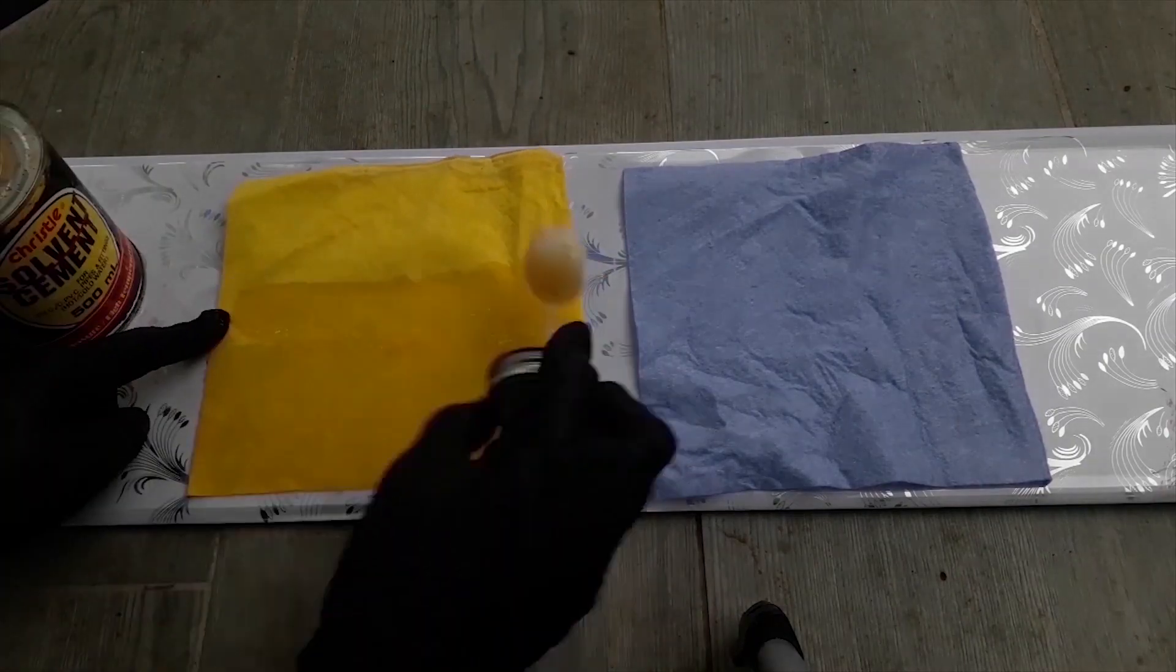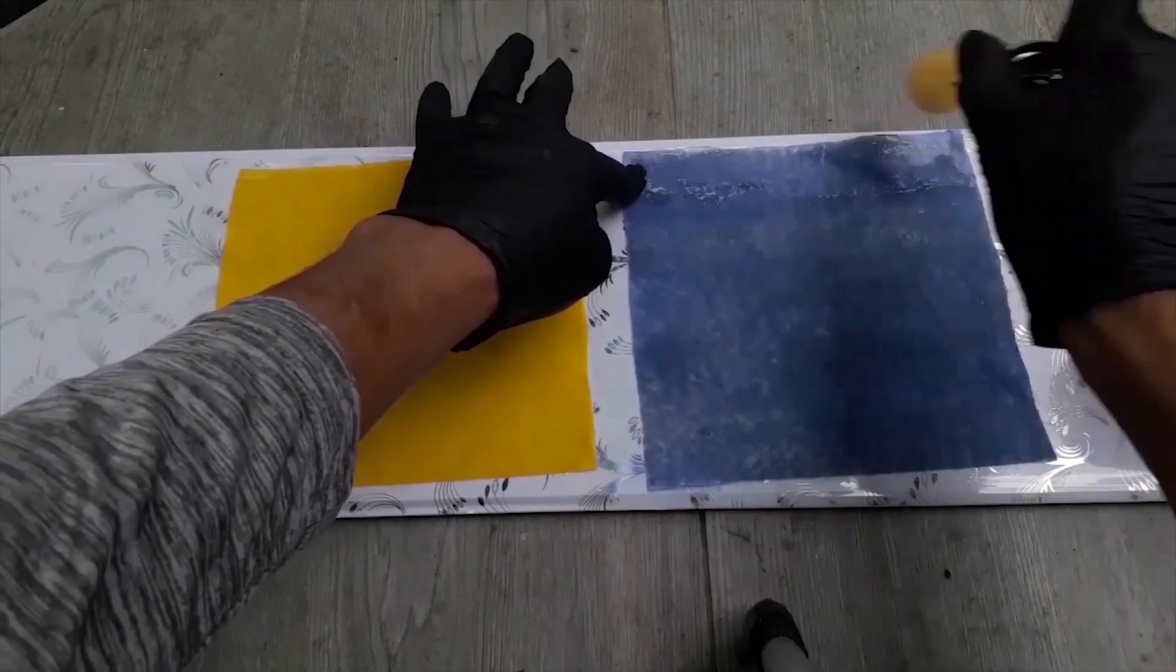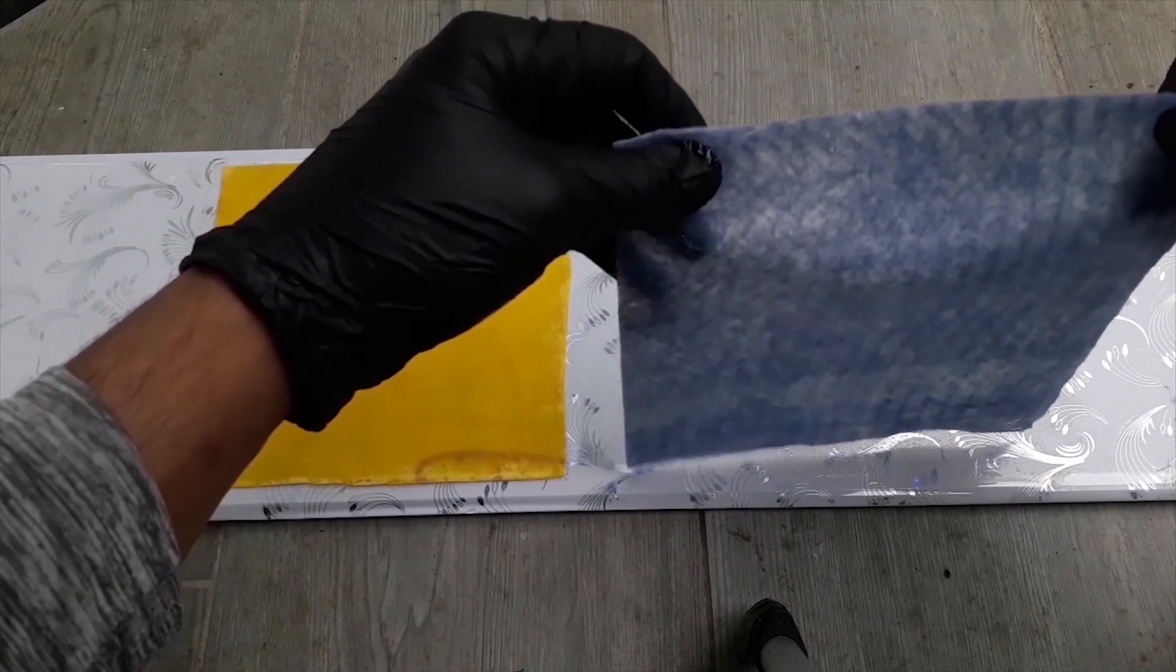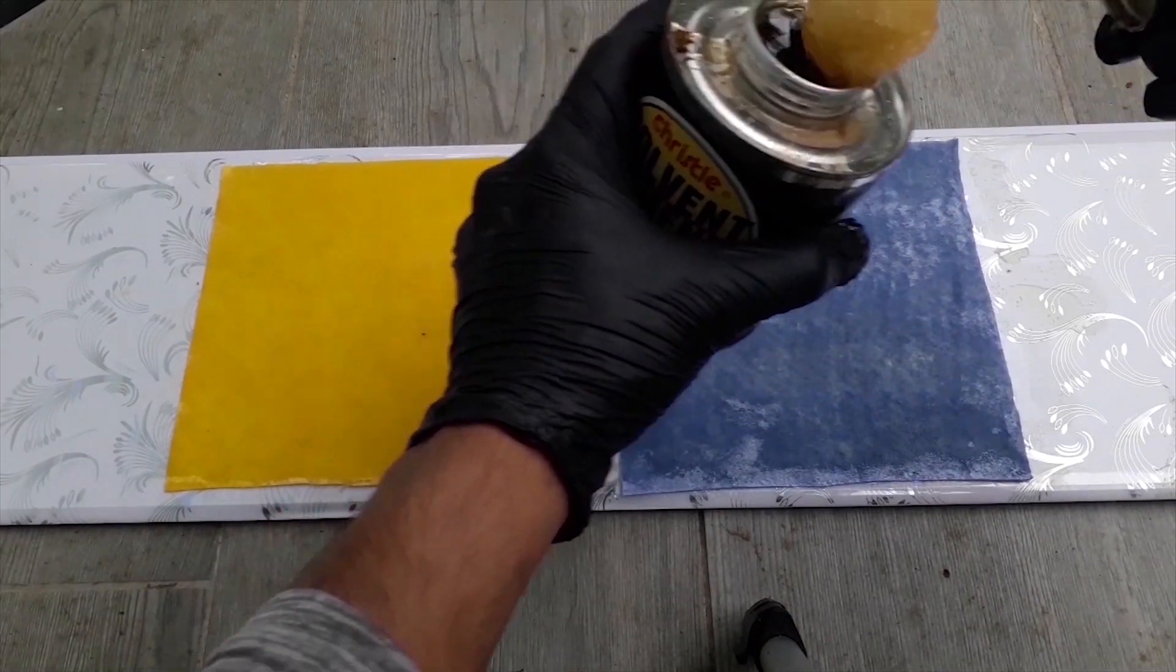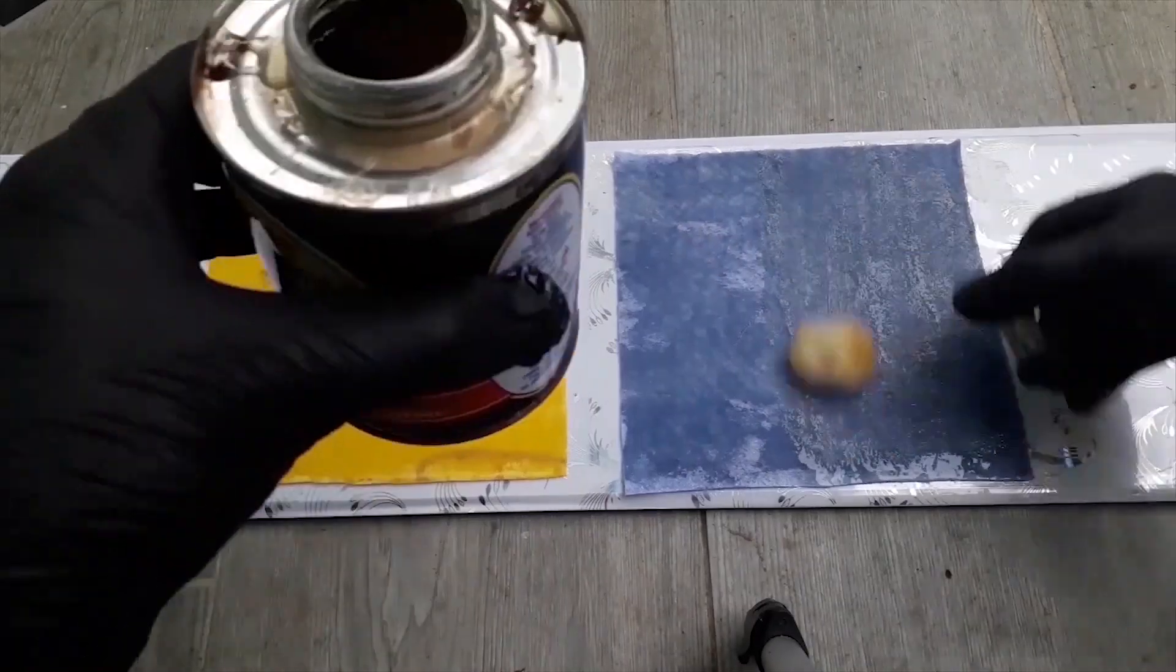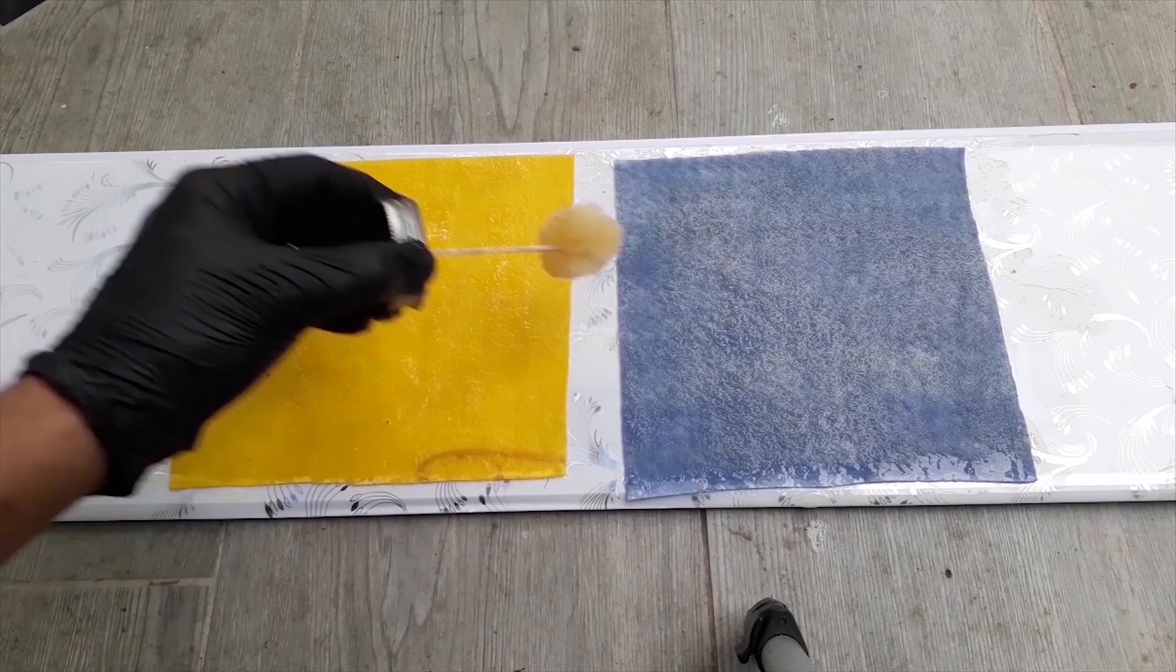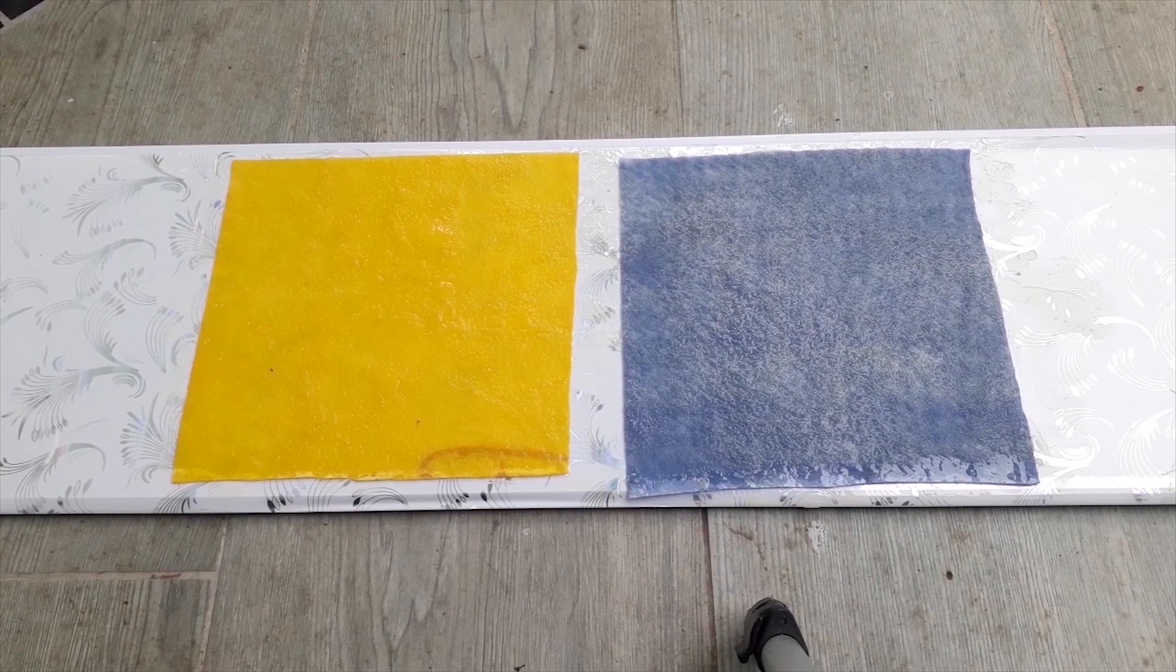This must be done outside in a well-ventilated area as these fumes can cause you to get a little high. Once one side of the cloth is coated with the glue, the cloth is then flipped over and the coating process is repeated. Once the coating process is done, I then allow the PVC cement to fully cure for one day.